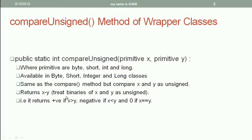It returns x minus y and treats binaries of x and y as unsigned. It returns positive if x is greater than y, negative if x is less than y, and it returns 0 if x is equal to y. And of course, here x and y are treated in unsigned way, not in the signed way.